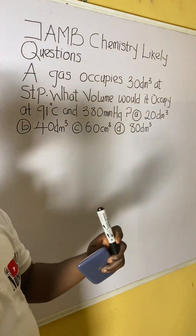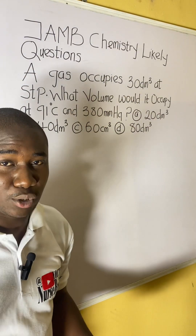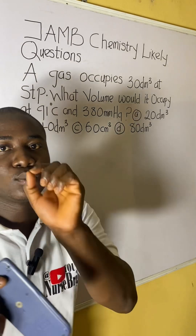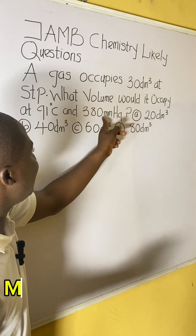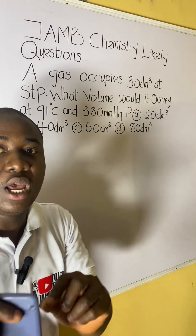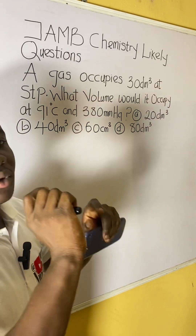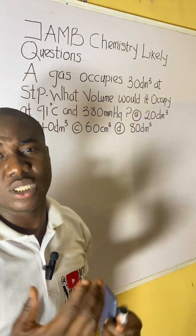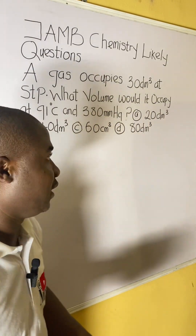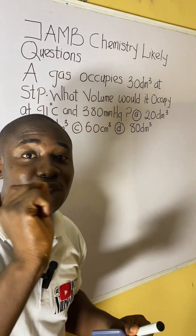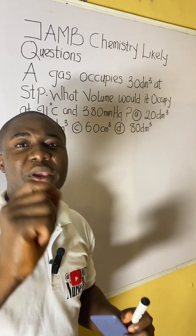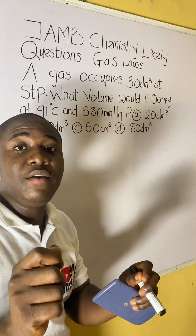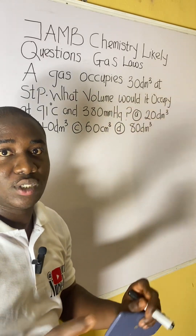The question asks: what volume would the gas occupy at 91 degrees Celsius and 380 mmHg — pronounced millimeters of mercury, where Hg is the element mercury. To determine how to approach this, we must identify the topic. From the mention of gas, this question is from the topic in chemistry called gas laws.